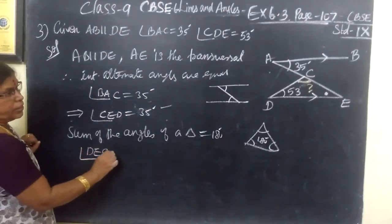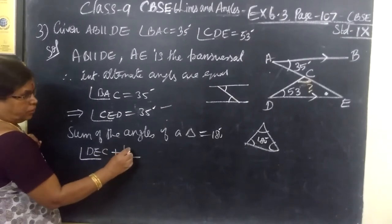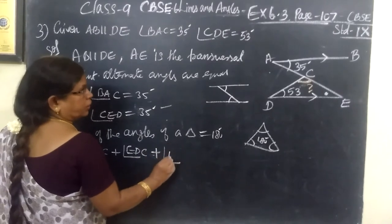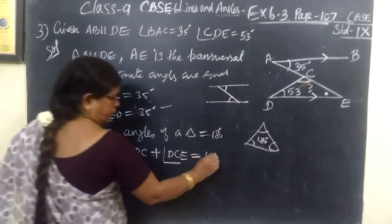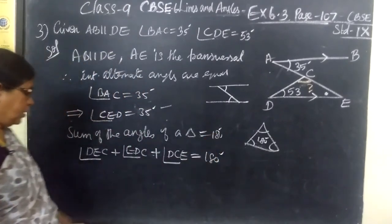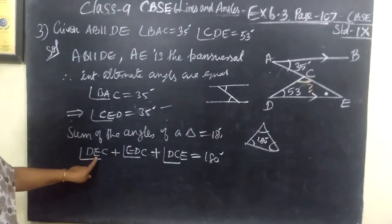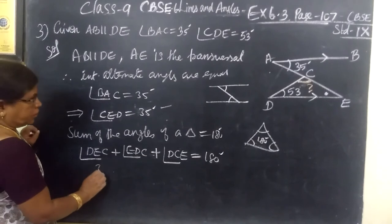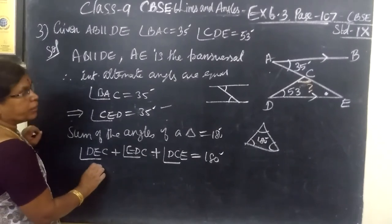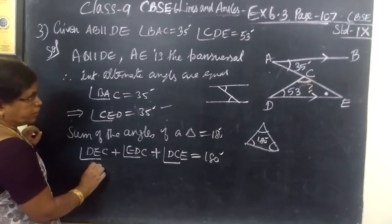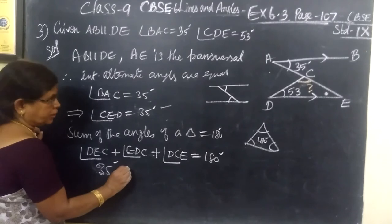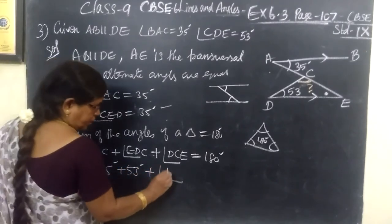Therefore, angle DEC plus angle EDC plus angle DCE equals 180 degrees. If you verify the letters: DEC is 35 degrees, EDC is 53 degrees, and DCE is what we want to find.